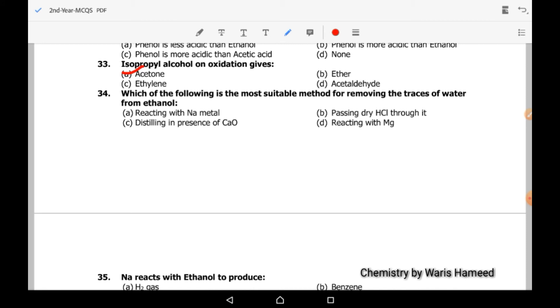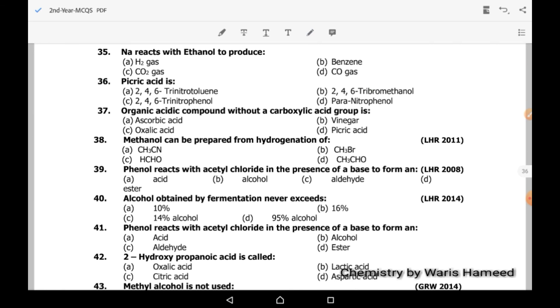Which of the following is the most suitable method for removing the traces of water from ethanol? It's distilling in the presence of calcium oxide. Option C is correct. Sodium reacts with ethanol to produce hydrogen gas.